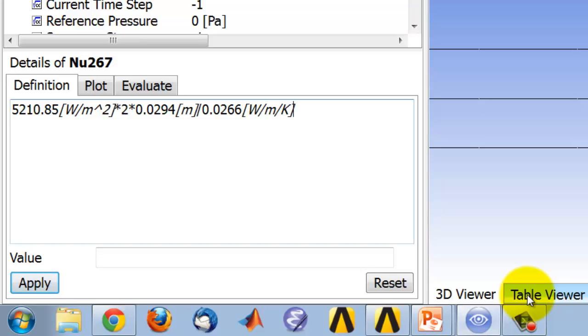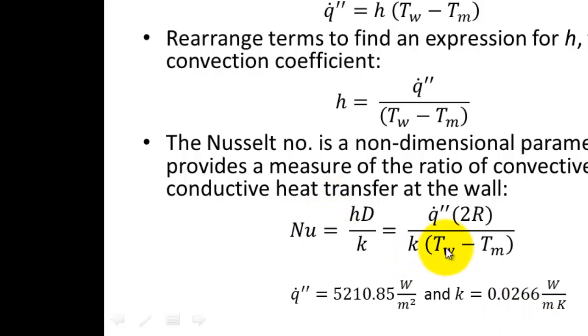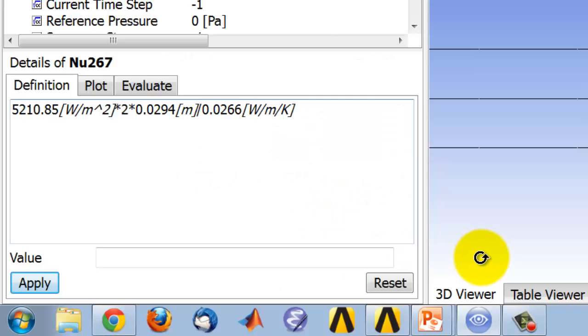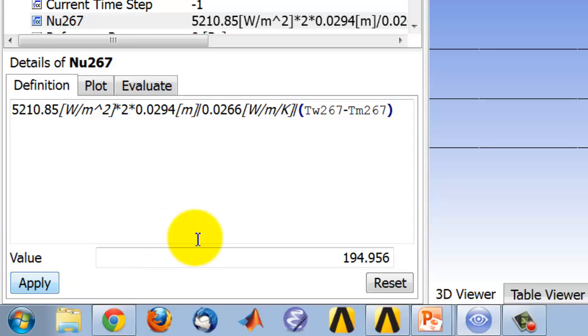And then I have the difference of the wall temperature and the mixed mean temperature. The wall temperature at 0.267, and it recognizes that, that's encouraging, and the mixed mean temperature at 0.267. Cross my fingers and click apply, and that gives me the Nusselt number at that location.